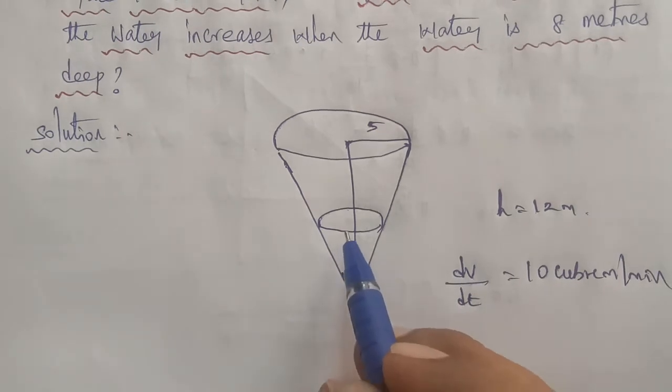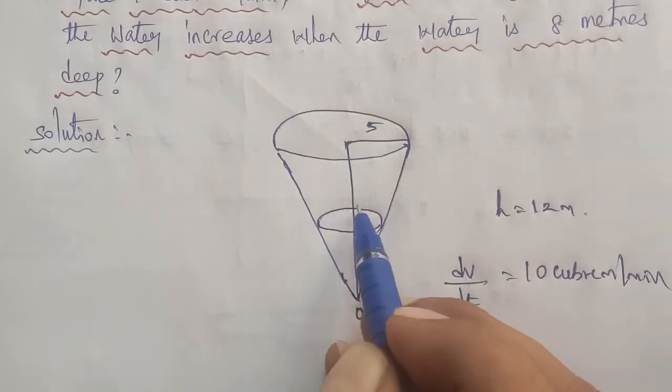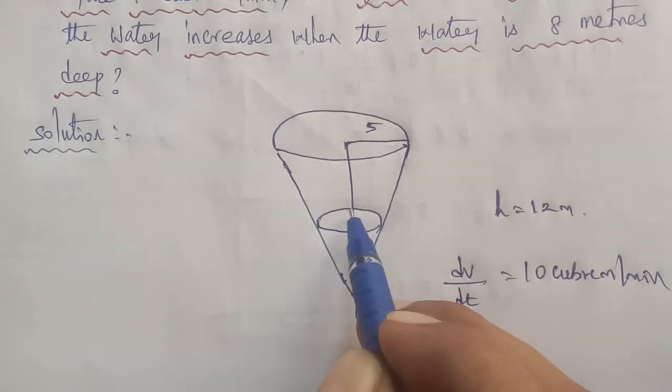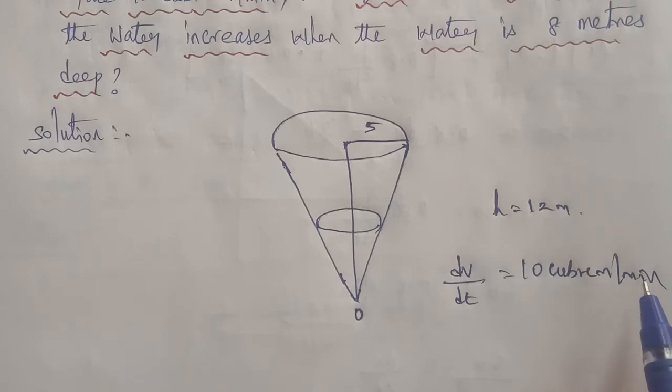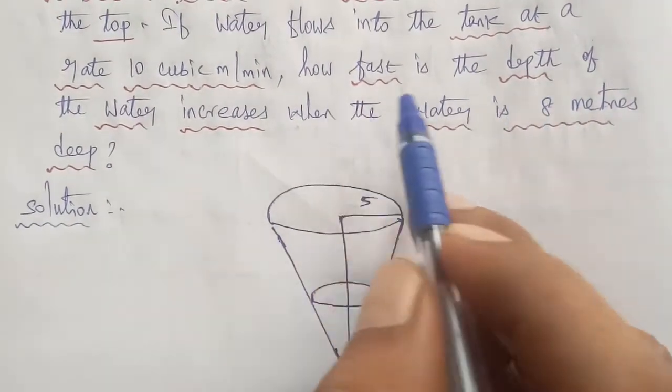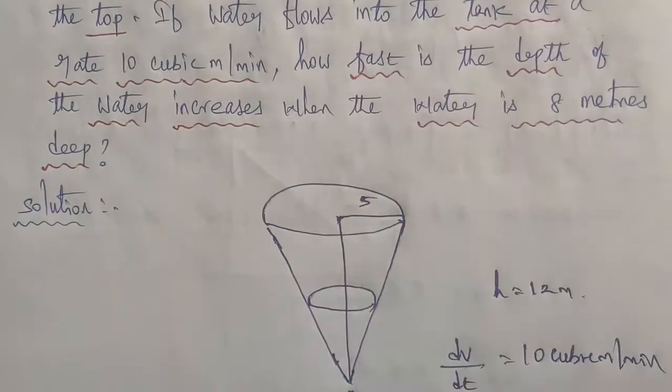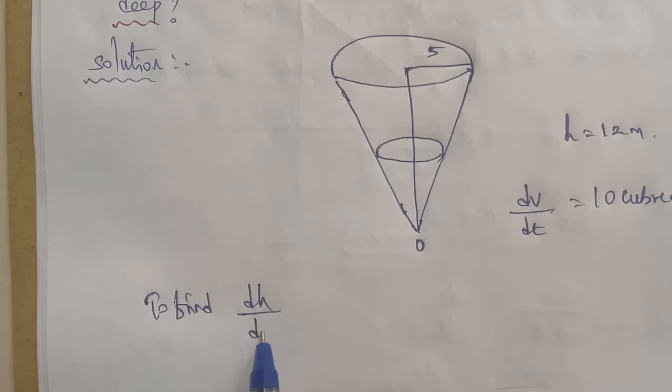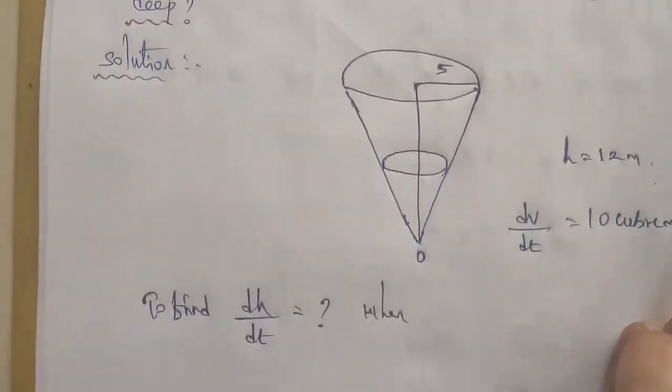So dv by dt means the volume increases per minute. The volume increases, so the changes occur. So changes, increases. If the volume changes, therefore dv by dt is equal to 10 cubic meter per minute. Next, we have to find: how fast does the depth of the water increase, so height increases, when water is 8 meter deep. So to find dh by dt when h is equal to 8 meter.